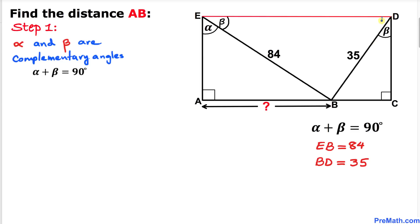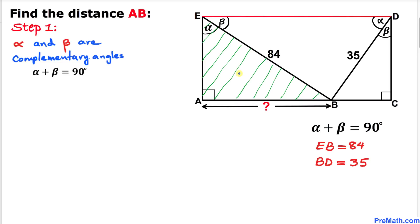Likewise, angle D is 90 degrees as well. We know that one angle is beta, so the other has to be alpha, since alpha and beta are complementary angles.